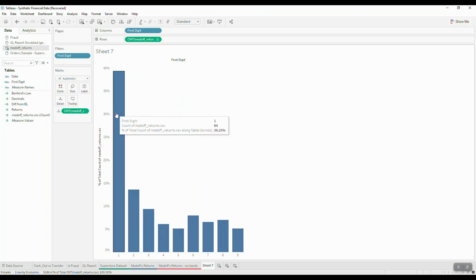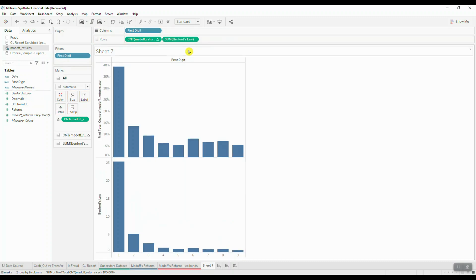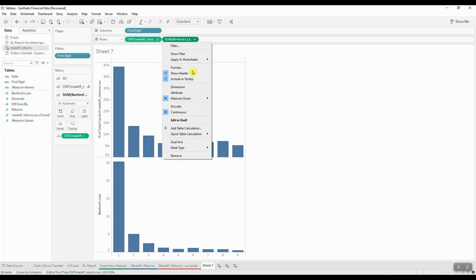Here we can see that number one as the first digit occurs 39.2 percent of the time, number two occurs 13.6 percent of the time, and now what we need to do is compare these frequencies with expected frequencies predicted by Benford's law. We're going to bring in our second calculation for Benford's law, drop it in the view, and then change the aggregation for Benford's law to give us the minimum.